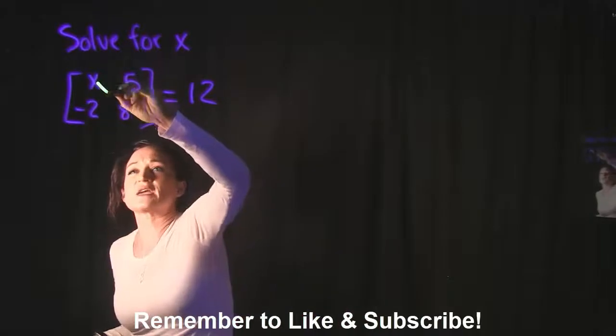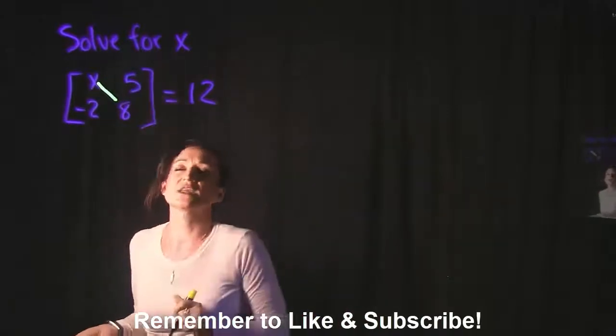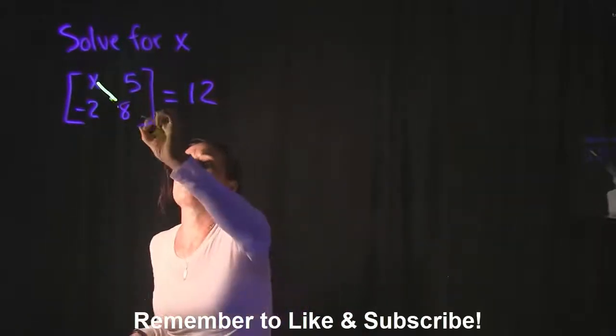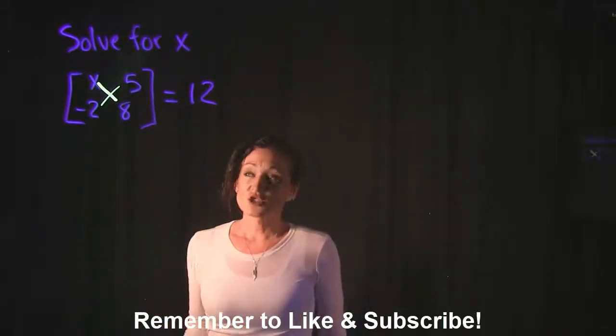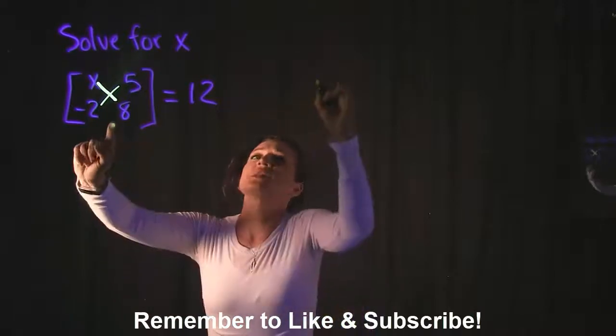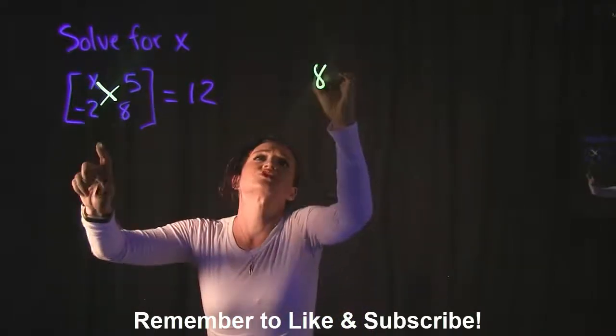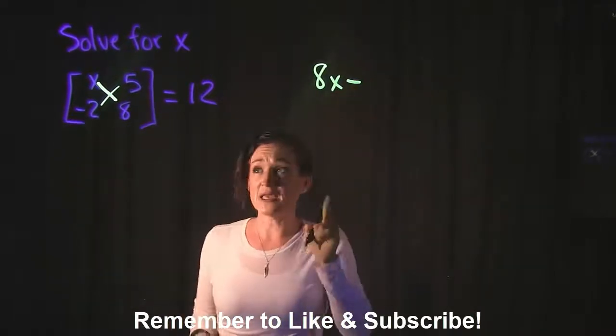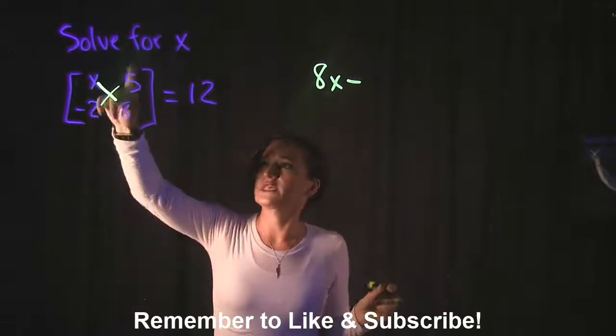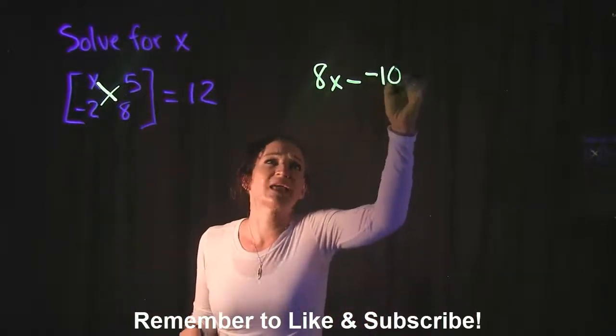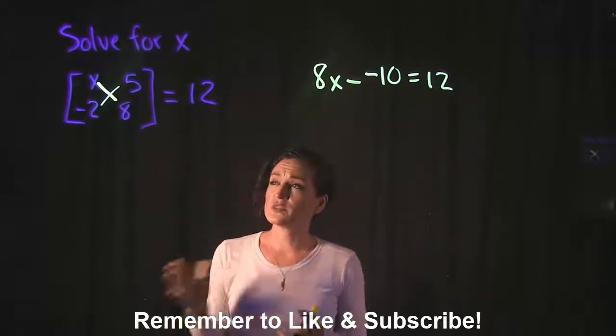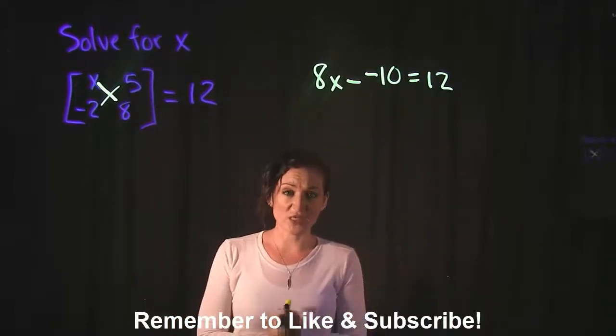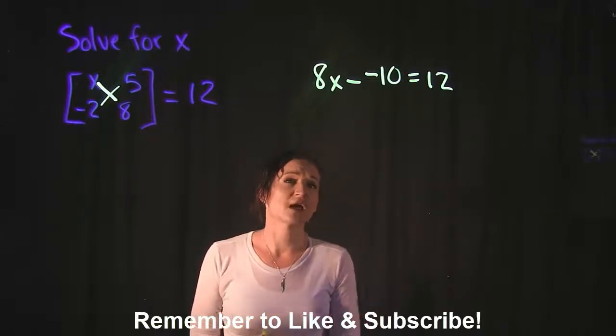So it's going to look like x times 8, or 8 times x, and we're going to subtract that by negative 2 times 5, and that's going to be set equal to 12. So what that's going to look like is this: we're going to have 8 times x, which is 8x, minus negative 2 times 5, which is a negative 10, and this is going to equal 12. By doing the determinant of the matrix, it gives us an equation that we can then solve for x.